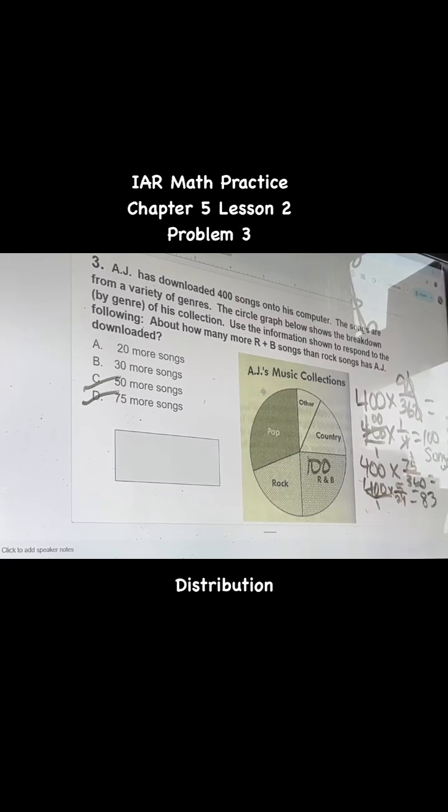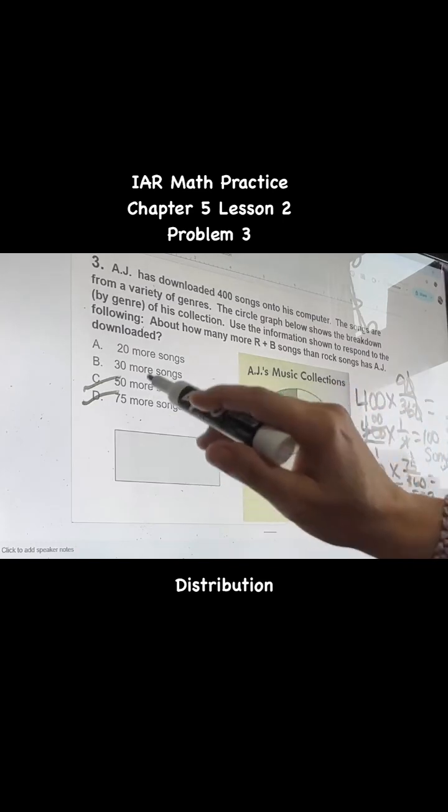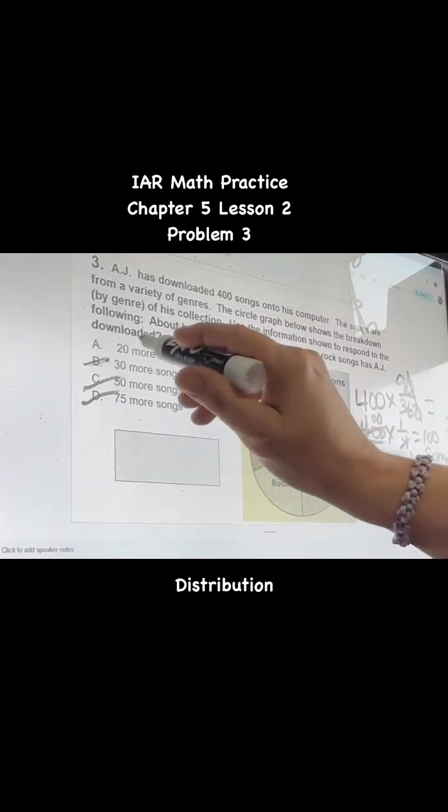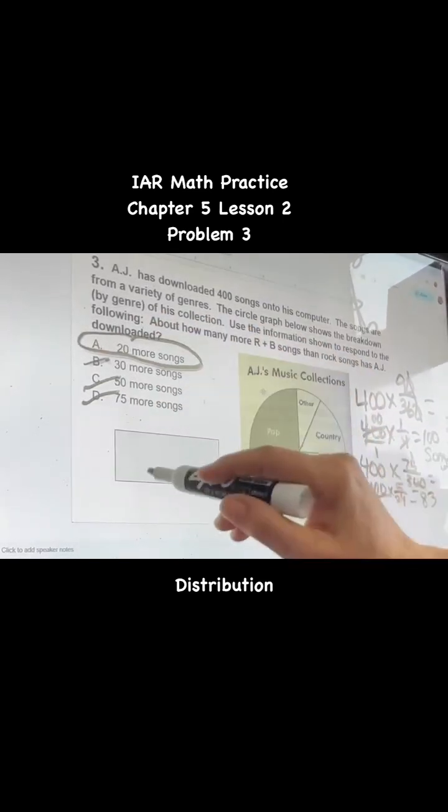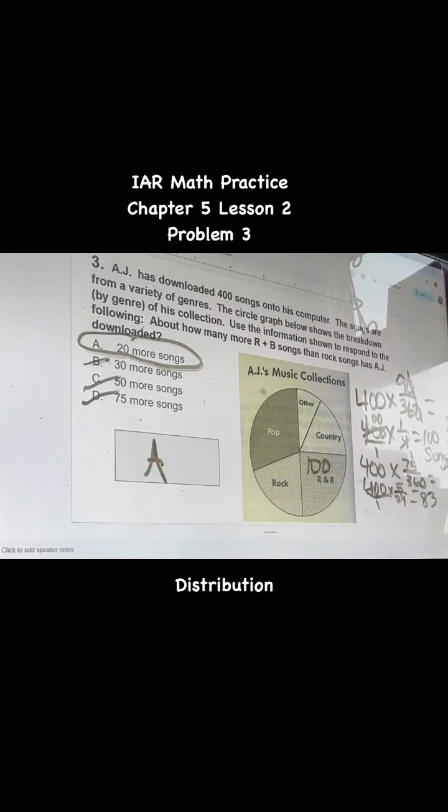So 100 minus 83 is 17. It's an estimate here. So 17 is closest to A, 20 more songs. That should be your answer.